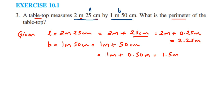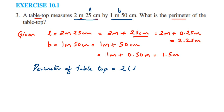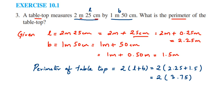Now we find the perimeter of the tabletop. Since the tabletop is in the shape of a rectangle, we use the formula: perimeter = 2 × (l + b). Substituting: 2 × (2.25 + 1.5) = 2 × 3.75 = 7.5. So the perimeter of the tabletop is 7.5 meter.